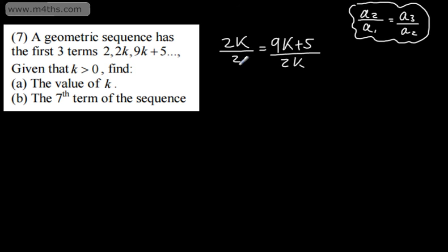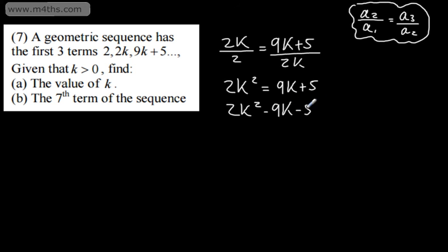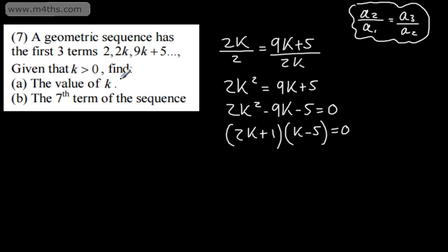So I'm going to go ahead and solve this equation. Multiplying both sides by 2k, the twos drop off and we have 2k squared equals 9k plus 5. We have a quadratic: 2k squared minus 9k minus 5 equals 0. That factors as (2k plus 1)(k minus 5) equals 0. We know k is greater than 0, so k cannot equal negative one half, and k equals positive 5.